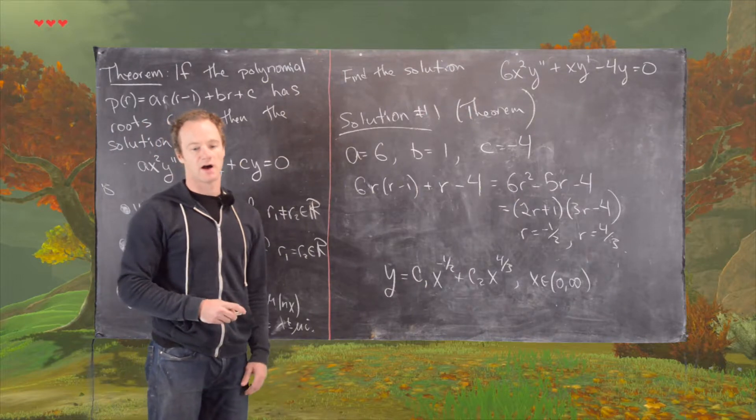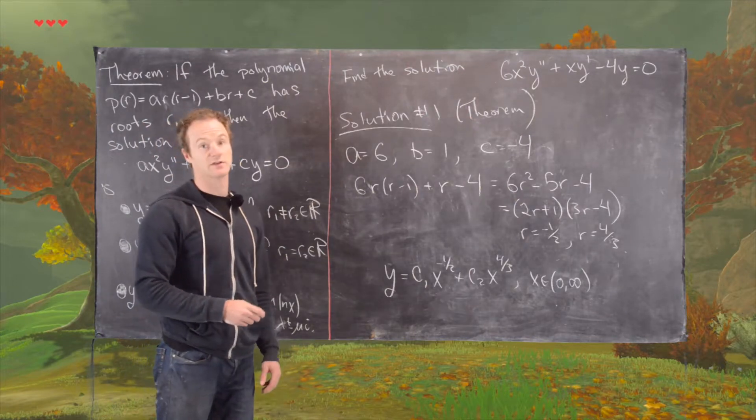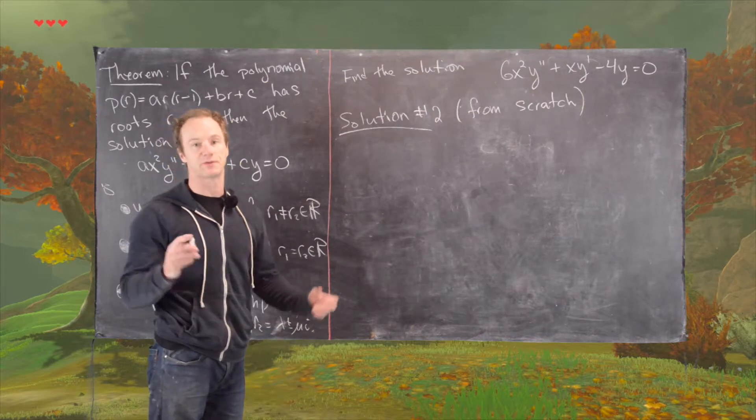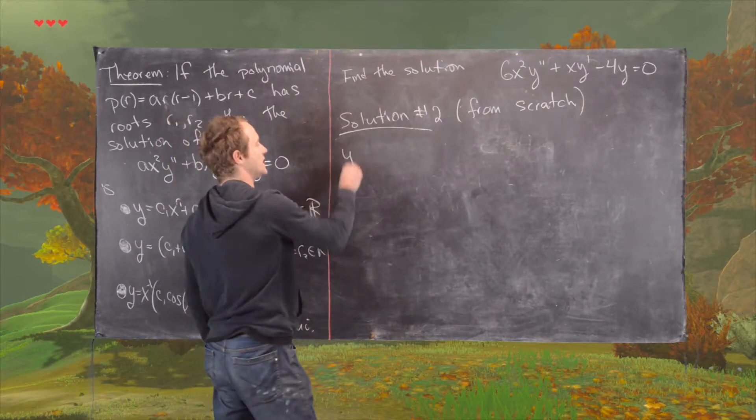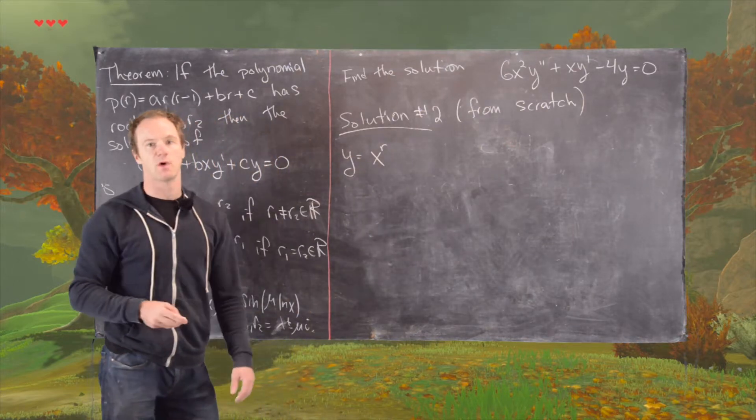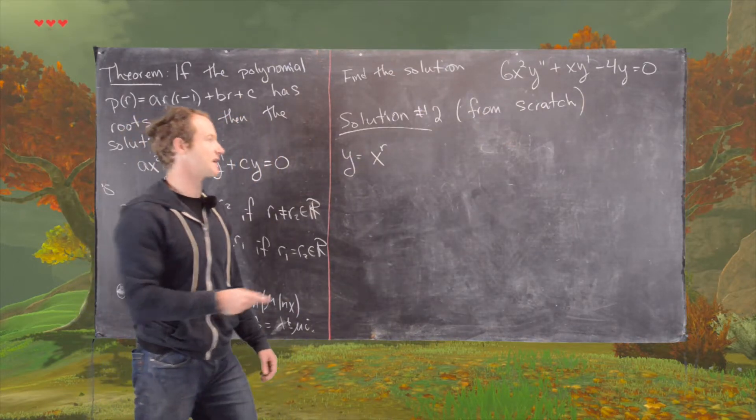Okay, good. So I'll clean up the board, and then we'll look at another solution. The next solution we want to look at is one that's from scratch. In other words, we guess that our solution will be of the form X to the R, and we want to determine what values that number R can take on.